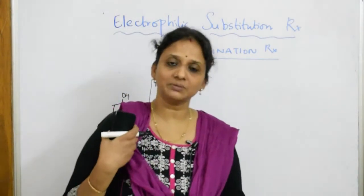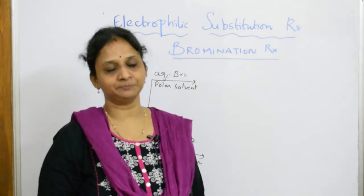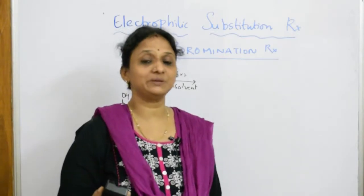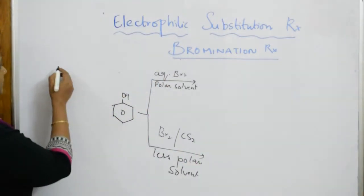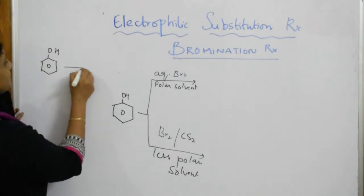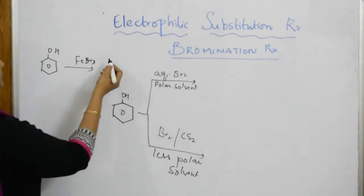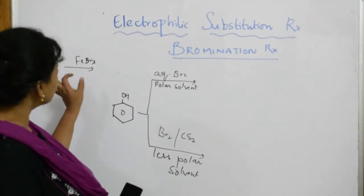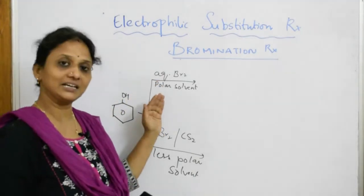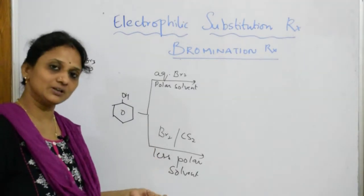Whenever we do alkylation or acylation, we pick up AlCl₃ — Friedel-Crafts. Suppose if I am doing bromination, I would normally pick FeBr₃, which acts as a Lewis acid catalyst. But here, instead of FeBr₃, we are using either a polar solvent or a non-polar solvent. Let us see what products we get.